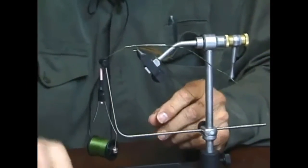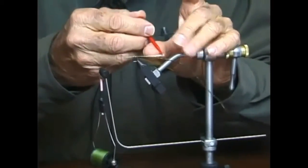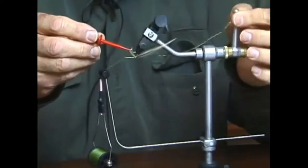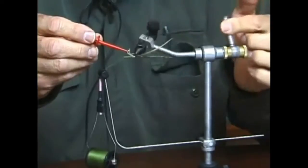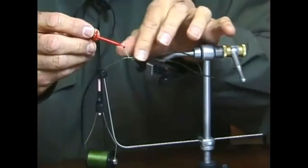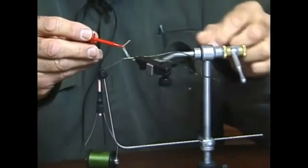I'm going to pick up my hackle plier and grab the body material which was the five sections from a turkey round and using the actuator arm and the rotator vise I'm going to move the feather fibers forward building the fly body.